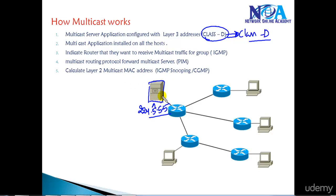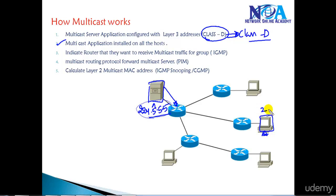Once you do this, this multicast server is responsible for sending the video stream to all hosts who want to receive the multicast traffic. The next thing is the multicast application also needs to be installed on the host — whichever host wants to receive the multicast traffic has to have the application installed for the same multicast address.